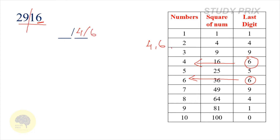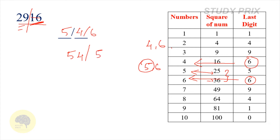The second step is to ignore the last 2 digits and take the first 2 digits, which is 29. Find where 29 lies in the table — it lies in between 25 and 36. The corresponding numbers are 5 and 6. Take the least number, which is 5. So the answer must start with 5, giving candidates 54 or 56.